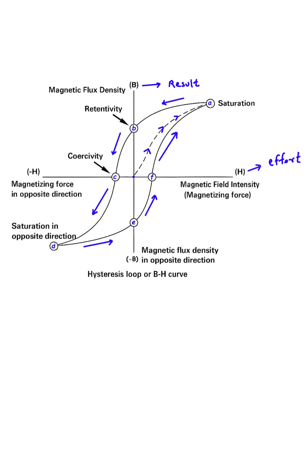Now, here's where it gets interesting. What happens when we reduce our effort back to zero? Instead of going back down the same path, the curve follows a new path to point B. At point B, our effort is zero, but notice the material is still magnetic. This leftover magnetism is called retentivity. It's like the material has a magnetic memory.